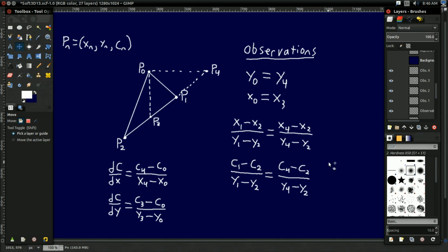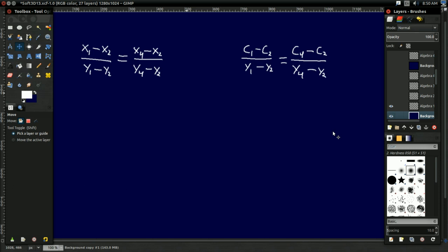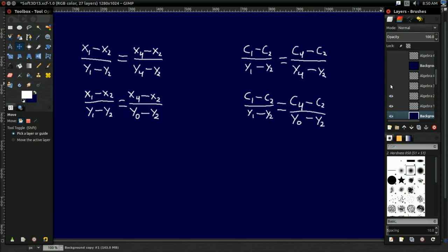So from here on out, it's just algebra. So let's go ahead and let's solve the gradient equations using these observations we've made. So these are the slope equations that we just defined. Now, from our observations, we know that Y4 is equal to Y0. So we can do a substitution here. And if you notice, there's only one variable left that we don't know. That's X4 in this equation and C4 in this equation. So we can multiply both sides by Y0 minus Y2. And then add X2 or C2, respectively, to both sides. And that gets us the equation for X4 and C4.